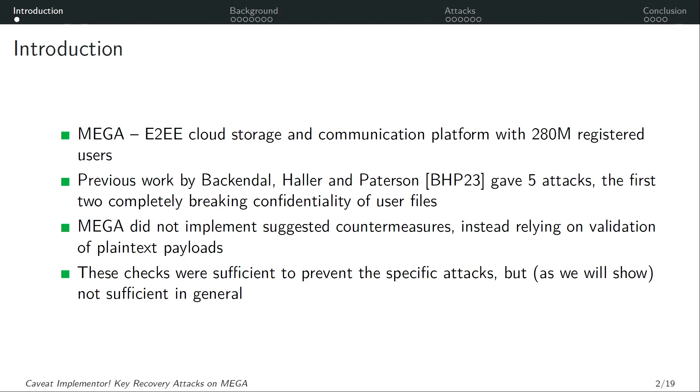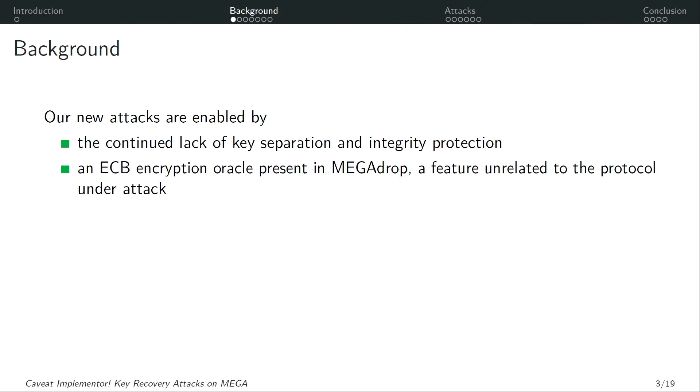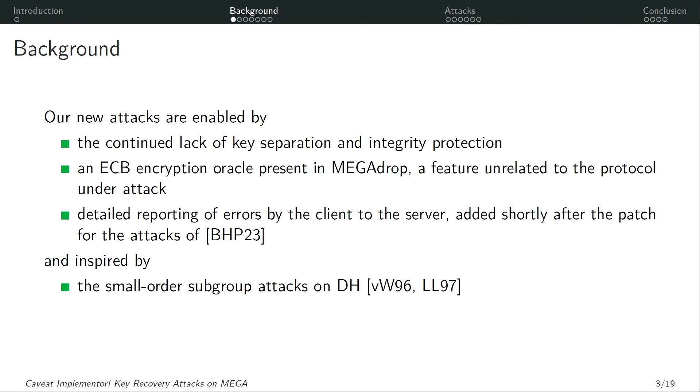Now, MEGA did not implement the countermeasures that were suggested by the authors of these attacks and instead decided to rely on validation of plaintext payloads. These checks were sufficient to prevent those specific attacks but not sufficient in general and in this talk I will show how we broke the patched version. Our new attacks are enabled by a couple of things. So first, this is the continued lack of key separation and integrity protection which was already present in the original design. Then, it's the existence of an ECB encryption oracle which is present in MEGA Drop which is a feature that is completely unrelated to the actual protocol under attack.